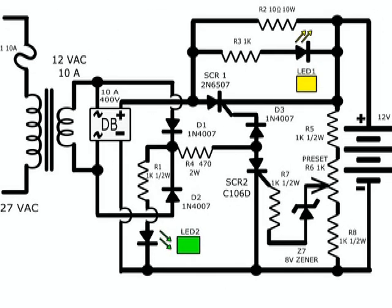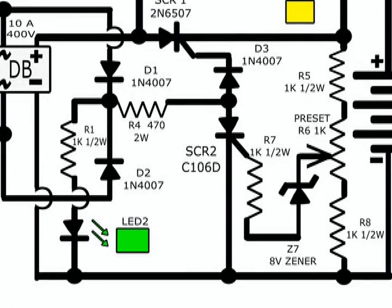As the battery is being charged, the voltage across its positive and negative terminal goes up. A sample of the battery voltage goes through resistor R5, preset potentiometer R6 and resistor R8.